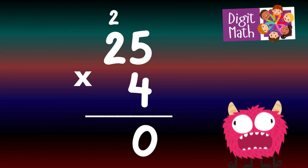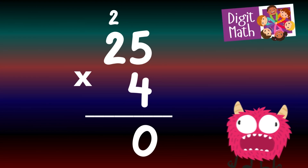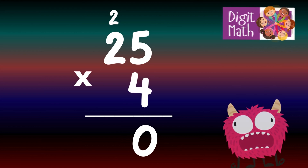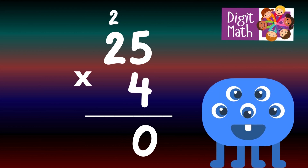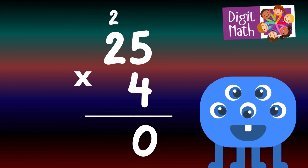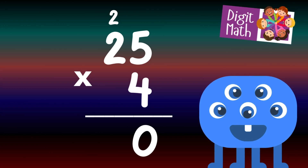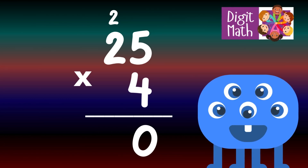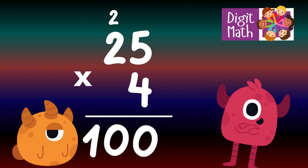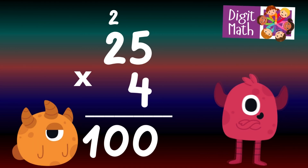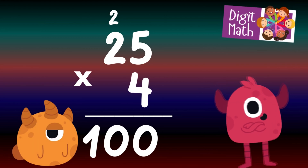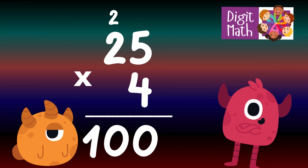Place 0 in the Units column and carry over 2 to the Tens column. In the Tens column, multiply 4 by 2, which equals 8. Add the carried over 2 to 8, making 10. Place 10 in the Tens and Hundreds column. So the final result is 25 times 4 equals 100.